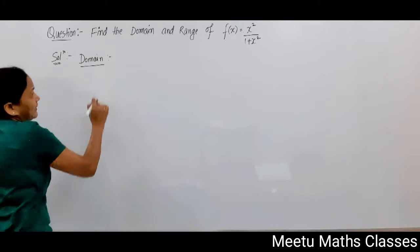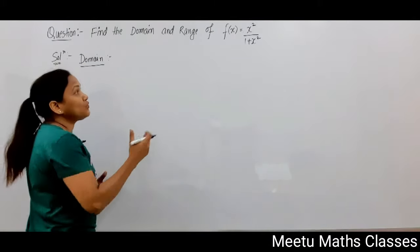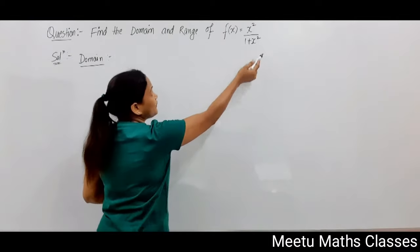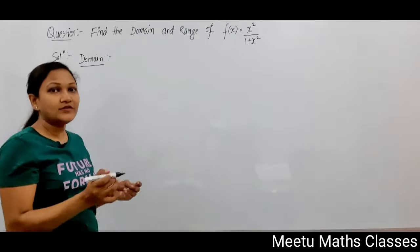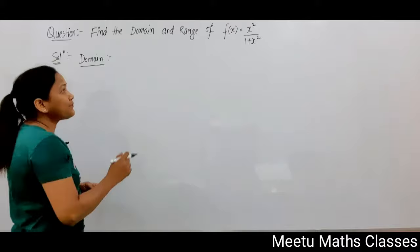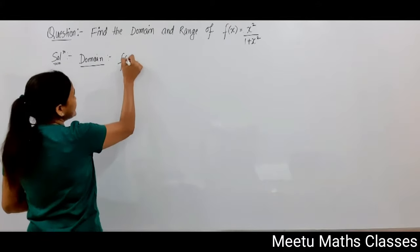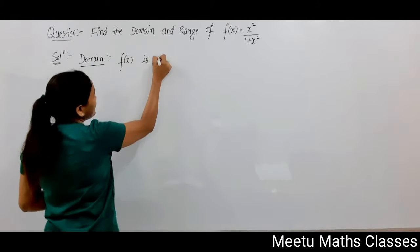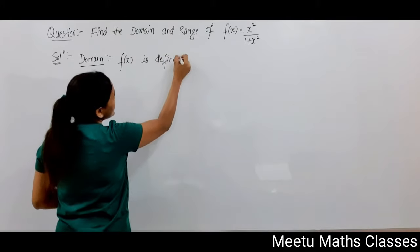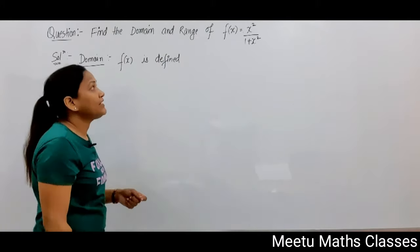The domain of f is those values of x for which your f(x) is defined or your f(x) takes real values. So your f(x) is defined since there is no square root function.